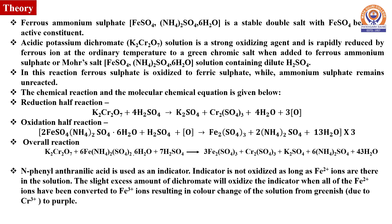The slight excess of dichromate will oxidize the indicator when all the ferrous ions have been converted into ferric ions, resulting in color change from greenish, which is due to the presence of Cr³⁺, to purple.